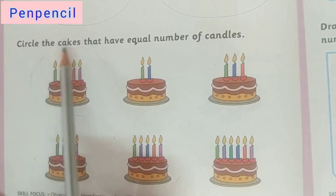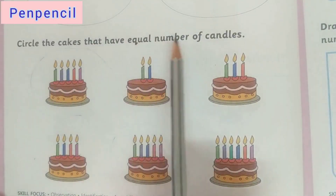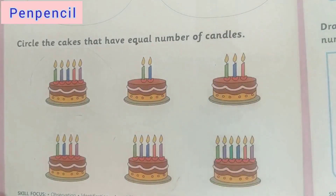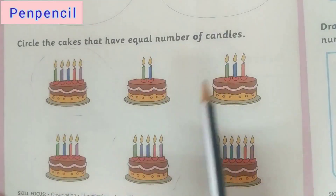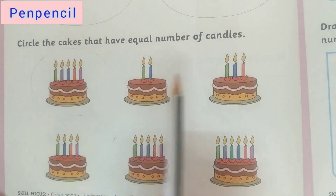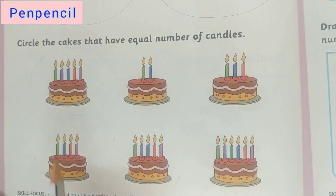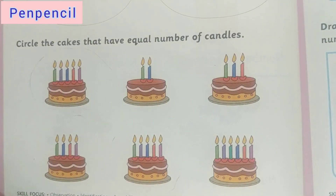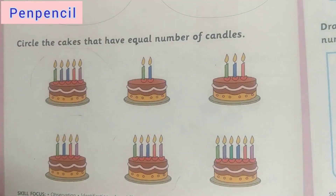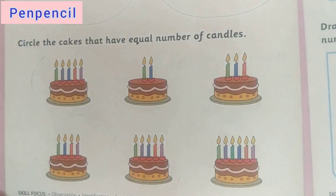Now here, circle the cakes that have equal number of candles. You have to count and whichever two are having the same equal number of candles, you have to circle. It is also the homework for you. You have to do it and send me.